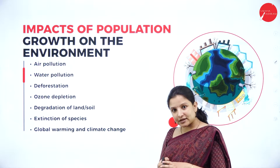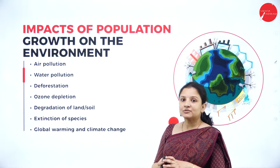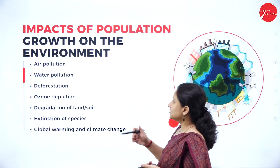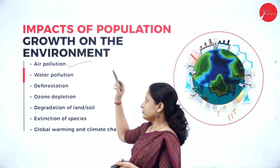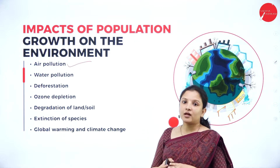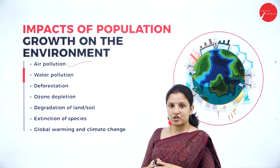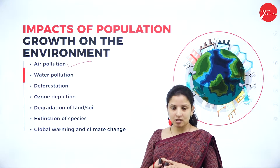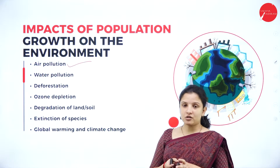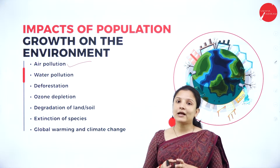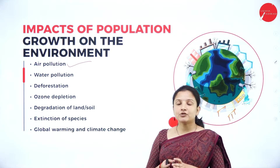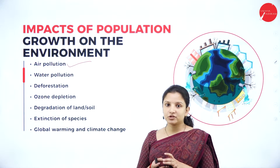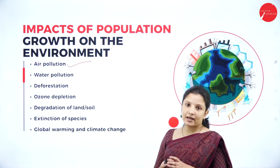Because if the environment gets affected, the organisms living in that environment also get affected. First, it will lead to air pollution. As the number of people in a population increases, the demand for good transportation, good infrastructure, and number of industries all increases, leading to the release of a lot of toxic smoke into the atmosphere, therefore causing air pollution.